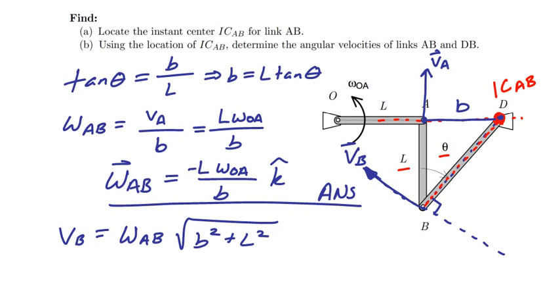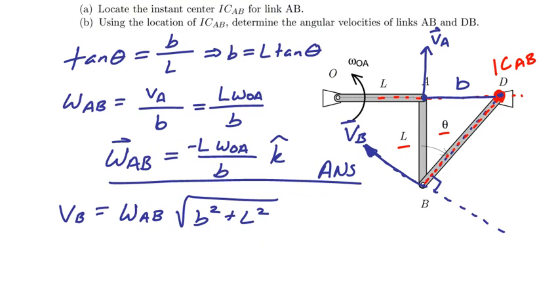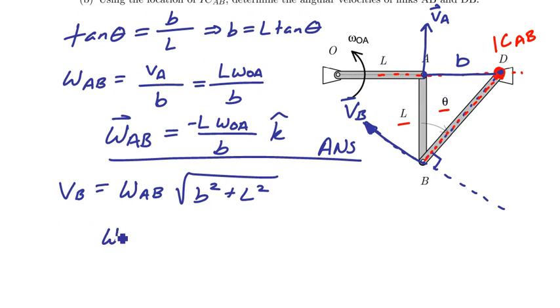Once I have that information, I can go ahead and divide through by that length to find omega of BD. And so in this case, I'll have that omega BD is equal to VB divided by the length from B to D, which is of course the square root of B squared plus L squared.